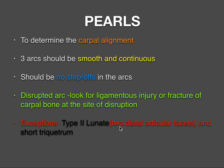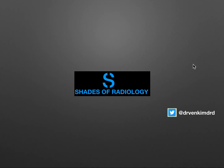There are two exceptions where the arcs may show mild step-off or displacement: the type 2 lunate and the short triquetrum. The type 2 lunate has two distal articular facets, whereas type 1 has a single articular facet and is the most common. Type 2 is less common, and with a type 2 lunate you may see mild depression or mild irregularity of the arcs. Always examine Gilula's carpal arcs on the AP radiograph of the wrist in cases of injury or chronic wrist pain.